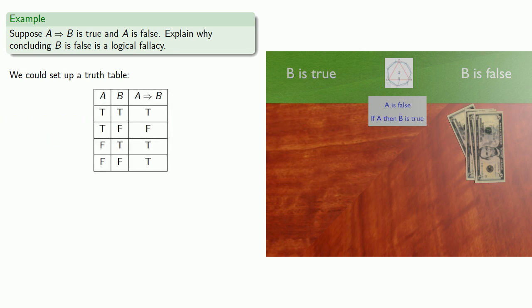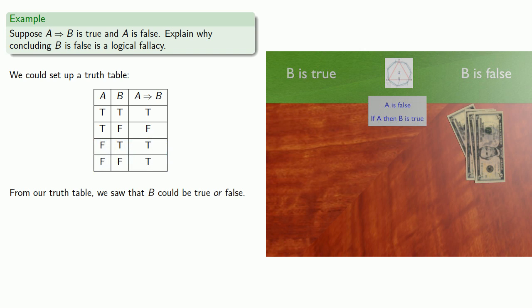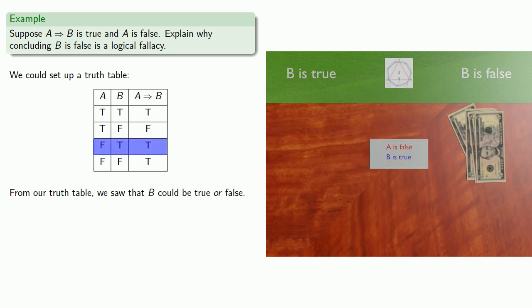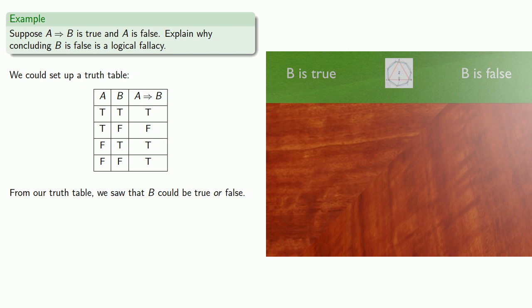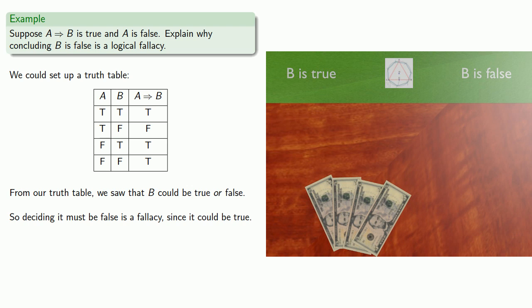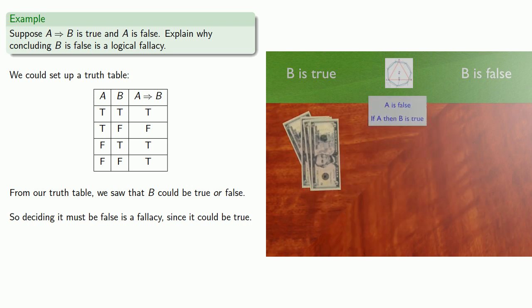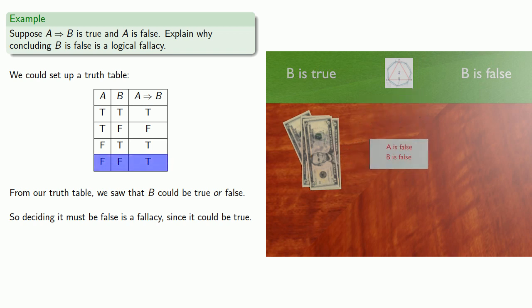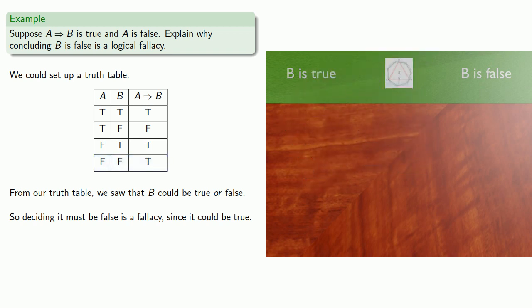Since we know the conditional is true and A is false, we know that we're in one of these two cases. From our truth table, we saw that B could be true or false. So if we claim it's false, it could have been true. That's a $20 lesson on logical fallacies — deciding that B must be false is a fallacy, since it could be true. It also won't help to claim B is true, because it could actually be false, and that claim is also a fallacy costing another $20.